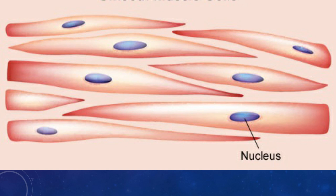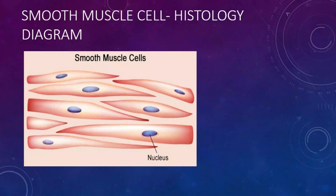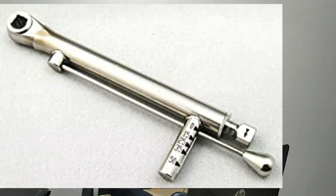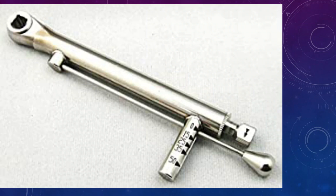What about this second image on your screen? I heard that a lot of histological questions and image-based questions are there in the recent NEET MDS paper. So the second image which is on your screen is a smooth muscle cell — basically a histology diagram.